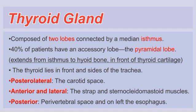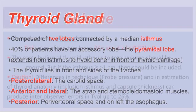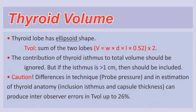The thyroid lies in front of the trachea. In its posterior-lateral relationship, there is the carotid space. Anteriorly and laterally there are the strap muscles and the sternocleidomastoid muscle. Posteriorly there is the paravertebral space, and on the left, the esophagus. The thyroid lobes are ellipsoid in shape, and to calculate the volume of an ellipsoid shape, we multiply the three dimensions — width, depth, and length.